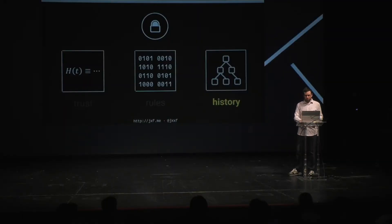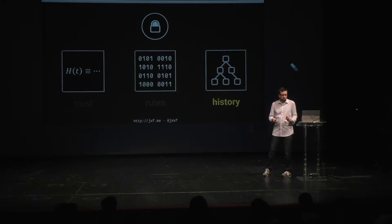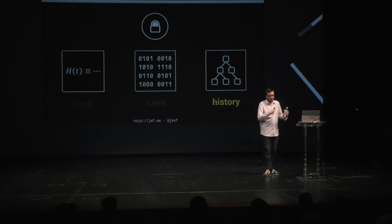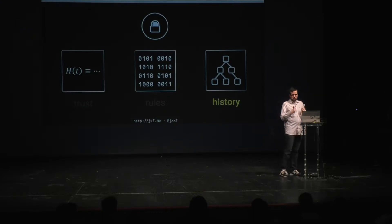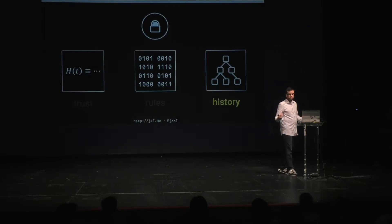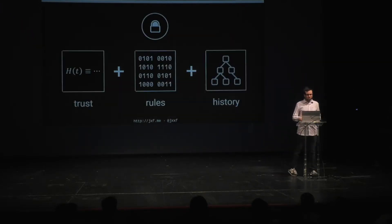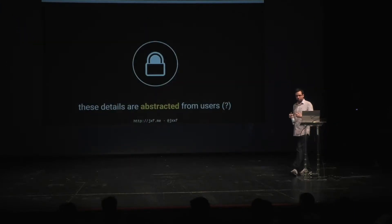If you change any one of these things — trust, rules, or history — you have a completely different cryptocurrency. Just as changing the institution you're trusting means you're talking about euros versus dollars, if somebody changes the rules about a cryptocurrency, that's a completely different cryptocurrency. The collection of these three things makes a form of money. With cryptocurrency right now, those details are not really abstracted from users the way they are with traditional currency.